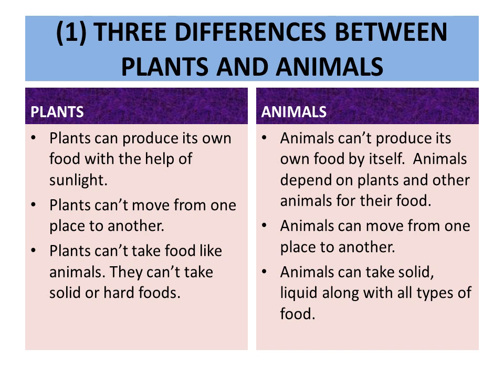Number 2. Plants can't move from one place to another. Animals can move from one place to another. Number 3. Plants can't take food like animals — they can't take solid or hard foods. Animals can take solid, liquid, and all types of food.